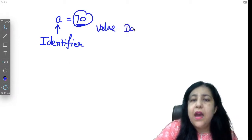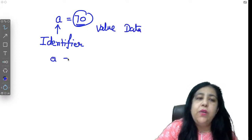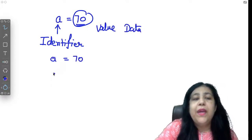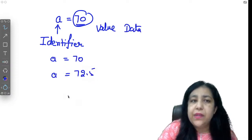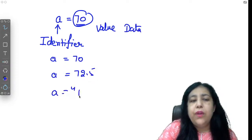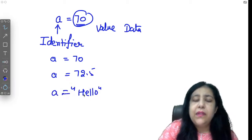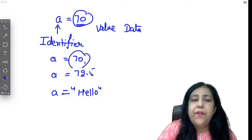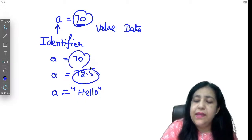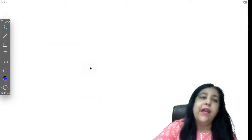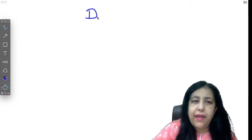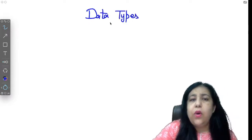Now this value could have been 70, it could have been 72.5, it could have been hello, or anything else. There are different possibilities of what can be in it. These different types of values are called data types.